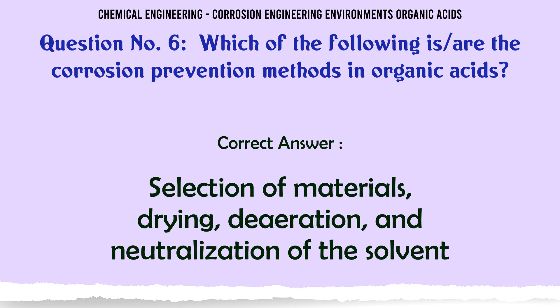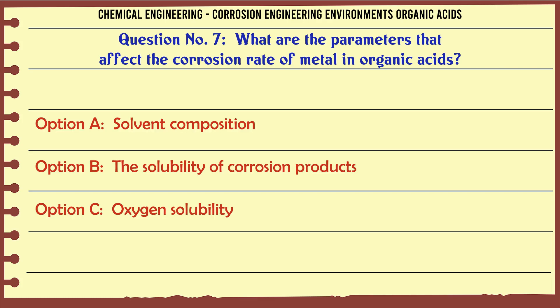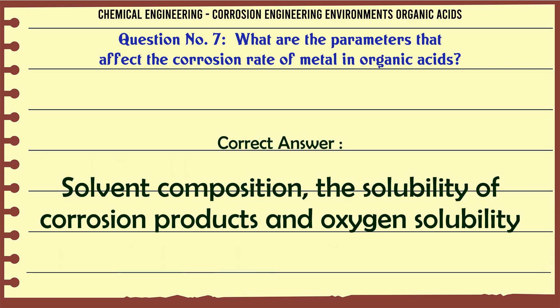What are the parameters that affect the corrosion rate of metal in organic acids? A. Solvent composition, B. The solubility of corrosion products, C. Oxygen solubility, D. Solvent composition, the solubility of corrosion products, and oxygen solubility. The correct answer is D: Solvent composition, the solubility of corrosion products, and oxygen solubility.